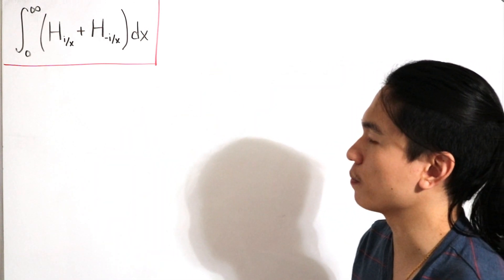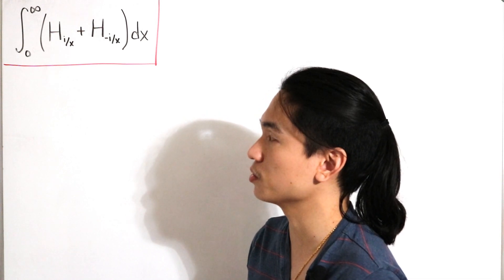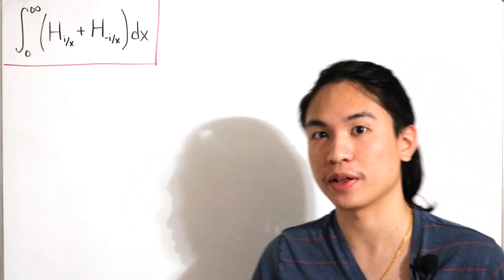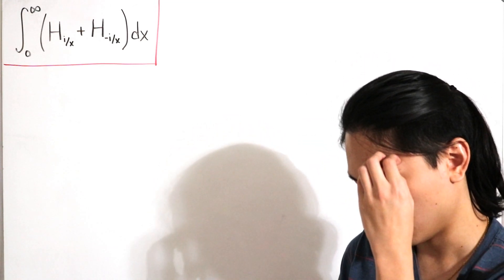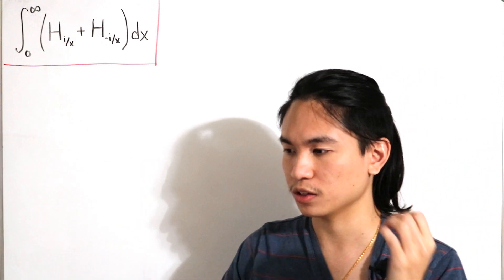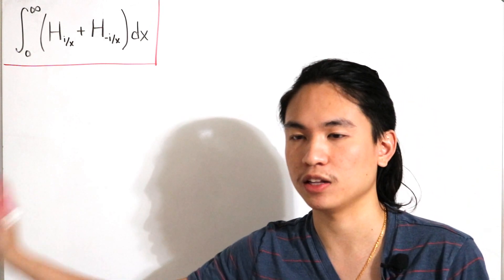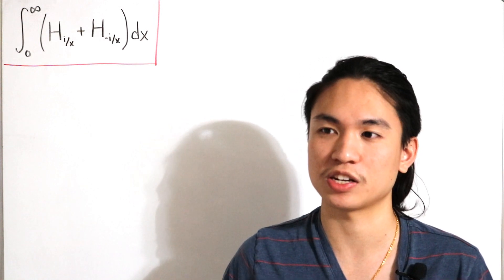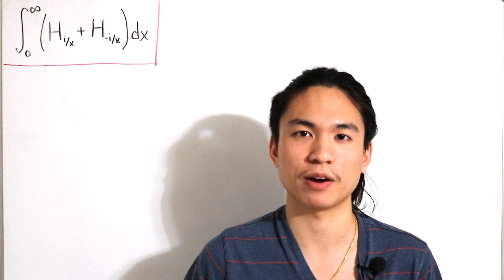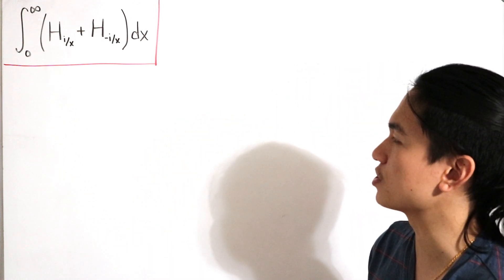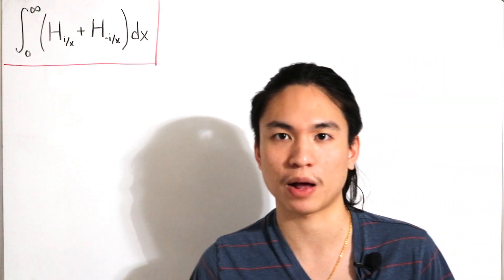We're going to use the integral representation of the nth harmonic number, manipulate that, and eventually this turns into a double integral which we evaluate using standard integration techniques. At one point we'll define a generalization of a function to fill in the gaps, and eventually we'll arrive at a well-known sum from complex analysis and analytic number theory. There will be a lot of discussion covering definitions and reasoning, so let's jump right in.